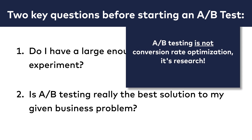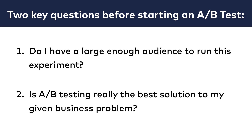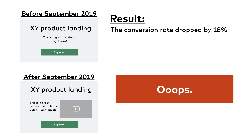Also remember that A/B testing is not conversion rate optimization — it's research. So the most important thing you will get out of an experiment is information and knowledge. Before you start your test, ask yourself: to solve your given business problem, do you really need to run an A/B test? Will you use — either short-term or long-term — the information you gather from an experiment? Do you remember the story from the previous module, where a company featured a video from an article on their homepage and as a result their overall conversion rate dropped 18%? That's a great example of a situation where they would have needed that information — they should have run an A/B test, and for them A/B testing would have been the best solution for that given business problem.